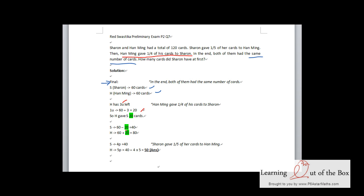By right, Sharon should have 20 cards less, and that is why 60 minus 20 gives you 40 cards.